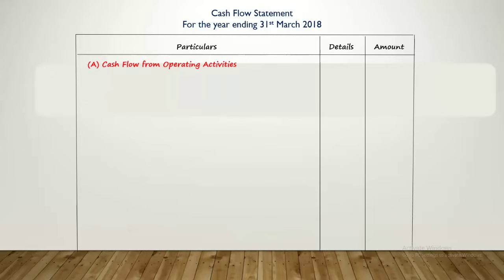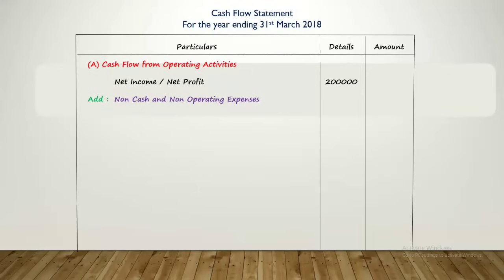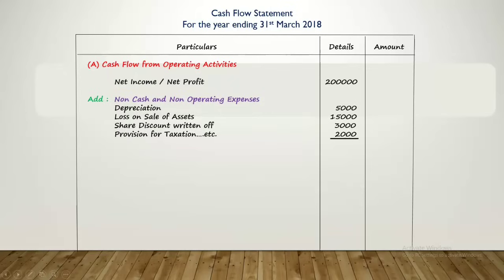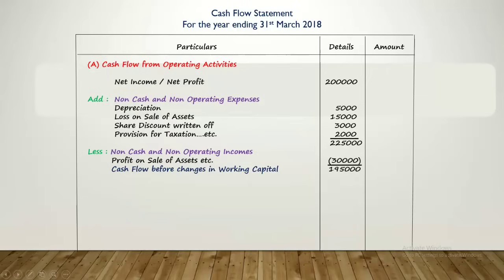The format starts with the heading 'Cash Flow from Operating Activities.' To calculate it, we use net profit from the trading and profit and loss account — let's say net profit is Rs. 2,00,000. Then we add non-cash and non-operating expenses such as depreciation, discount on shares written off, loss on sale of assets, provision for taxation, etc. After that, we subtract non-cash and non-operating income such as profit on sale of assets, dividend received, etc.